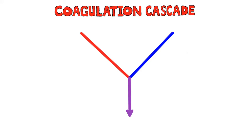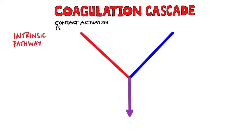This is the skeleton of the coagulation cascade. I'll draw the intrinsic pathway in red. It results from contact activation where there is surface damage and features factors 12, 11, 9, and 8.